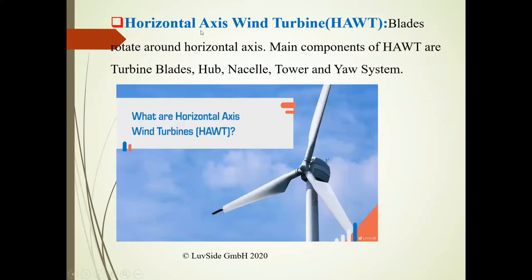The next term is horizontal axis wind turbine, or HAWT. In this image, you can see the blades rotate around a horizontal axis. The main components of HAWT are turbine blades, hub, nacelle, tower, and yaw system.